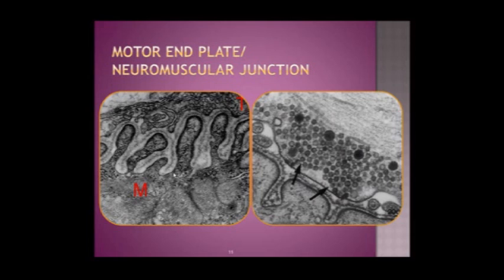Here's another close-up of the same thing. This is the muscle down here. This is a little space in between called the cleft, and this is where the nerve is ending. This area is the synapse. These are those small vesicles containing neurotransmitter that will tell the muscle to contract.